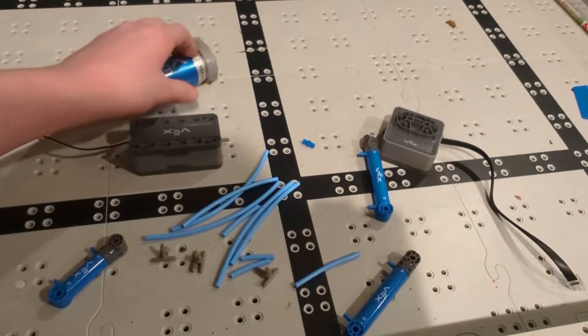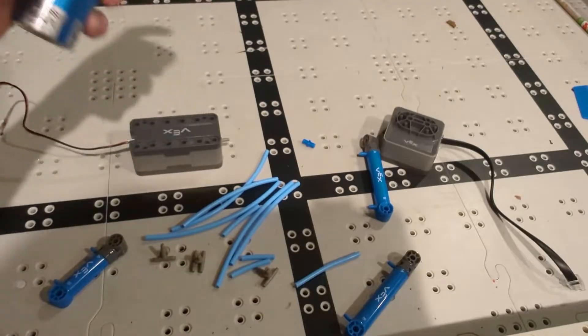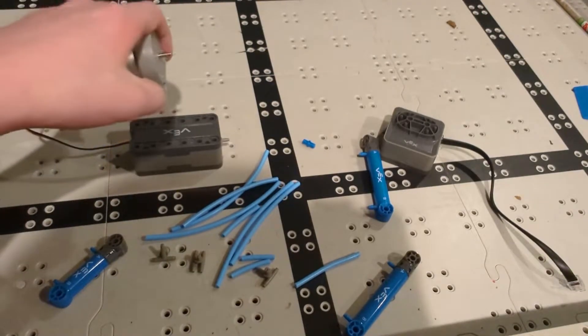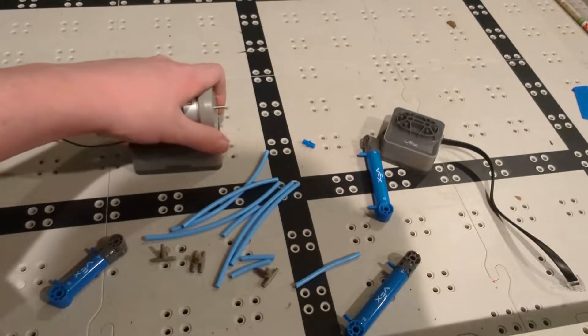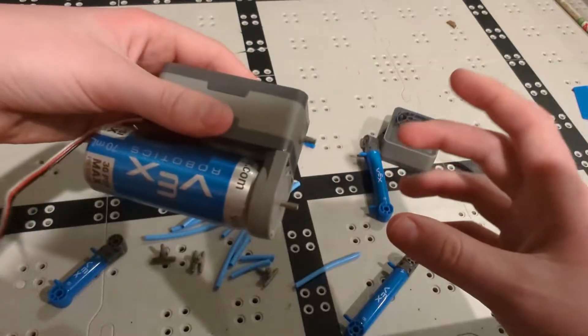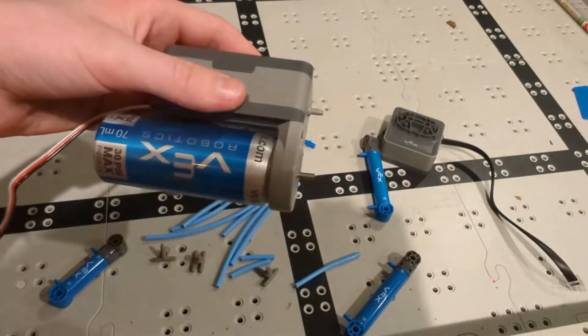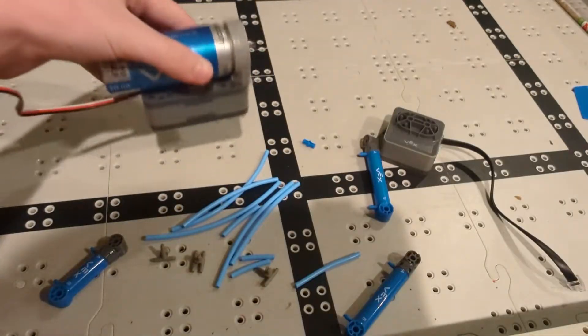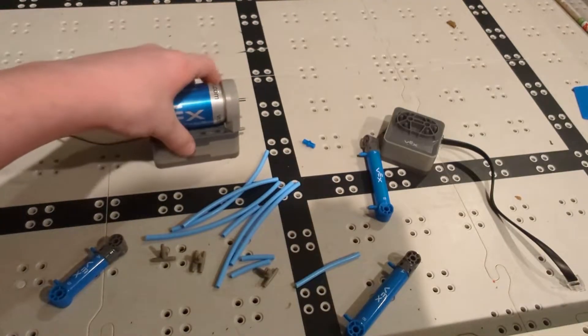So now we're going to show you how to actually build these together and be able to create your first pneumatics line. So the first thing you're going to do is hook these two together. Now we just like to have these both together since they kind of need to be lined into one another for the pneumatics to work properly. So we just put them together and then we place them where we want on our bot.